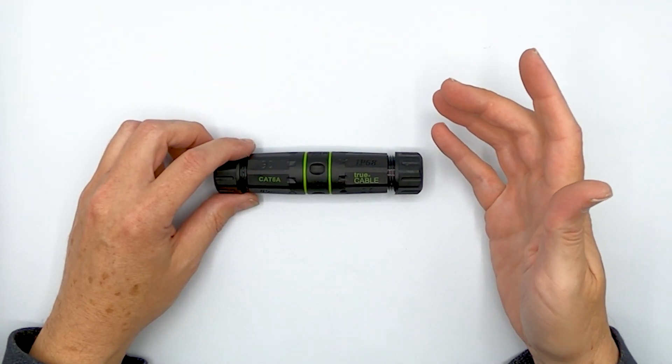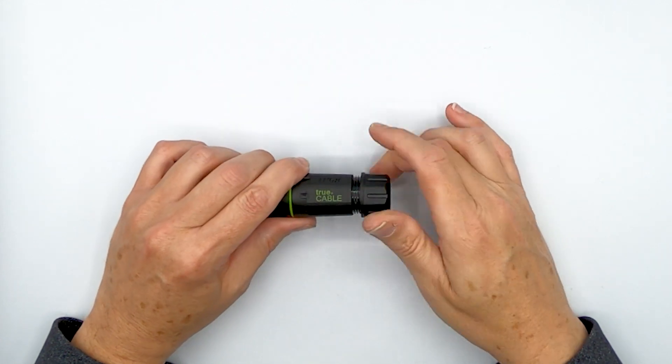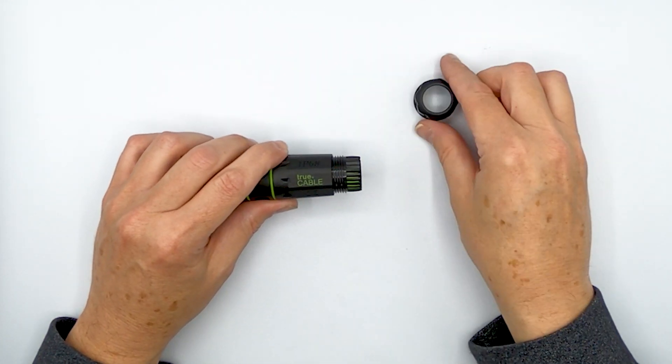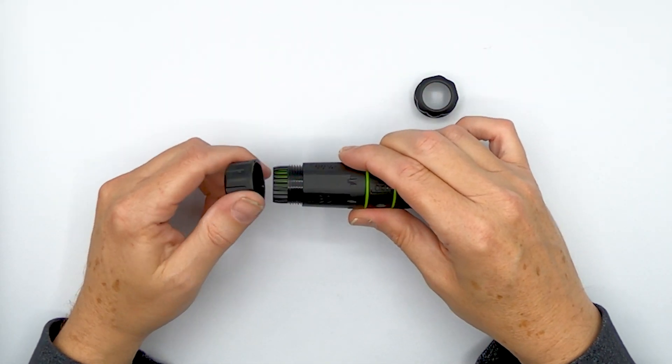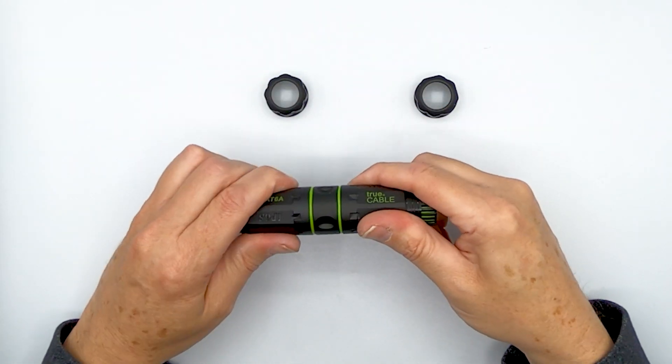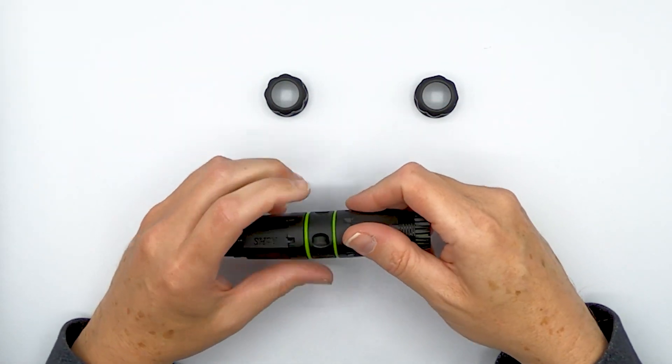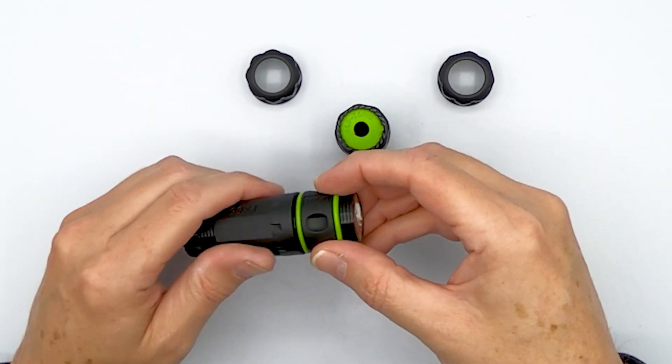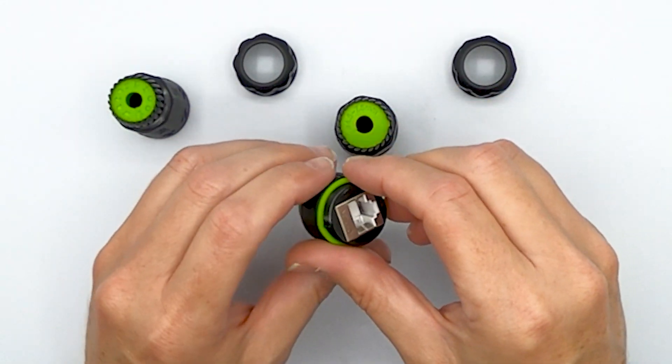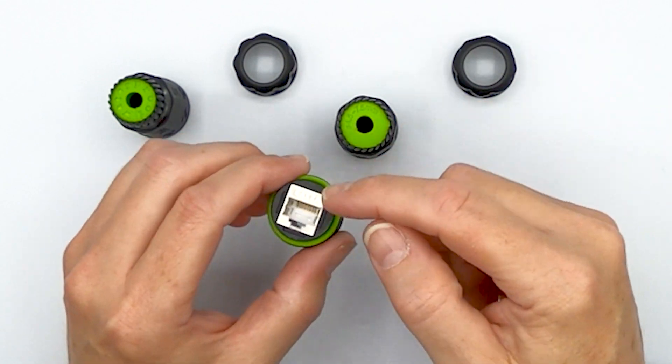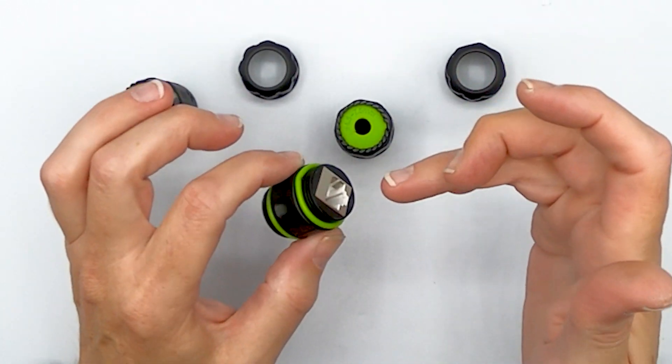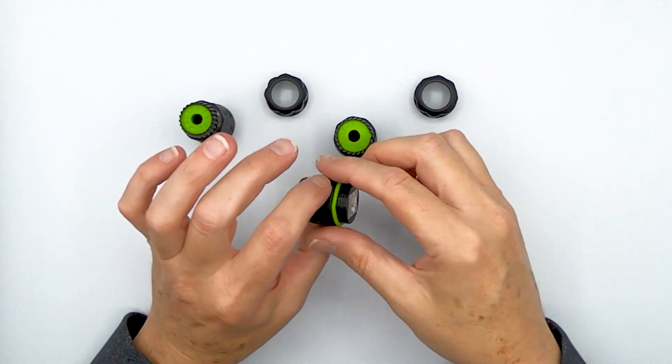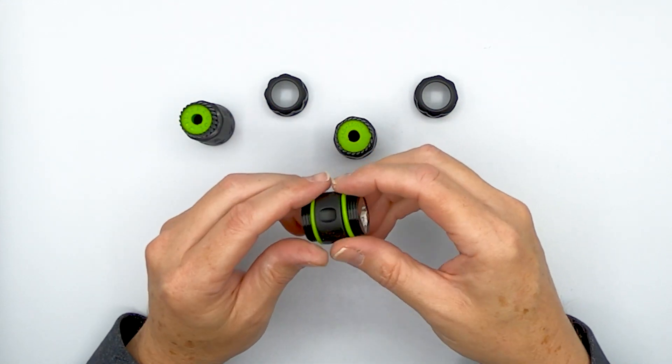So the way you start working with this is you take off the end caps, like so. And then you start untwisting at these two green rubber grommets. And what we're going to get is the actual coupler in the very center. It is a shielded coupler on both sides. So you can use either shielded or unshielded cable with this coupler and both will work just fine.